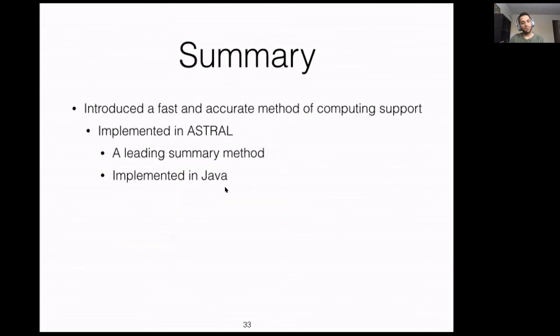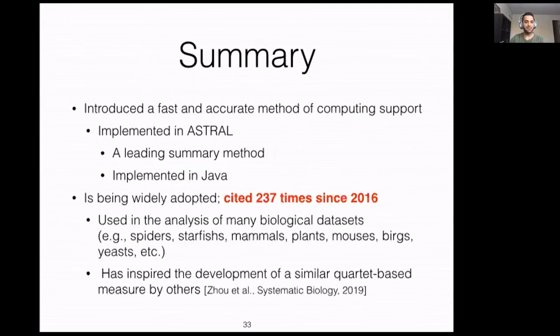In summary, we introduced a fast and accurate method of computing support. This method is implemented in ASTRAL, which is a leading summary method implemented in Java. Since publication, it has been widely adopted by the research community, cited more than 137 times since 2016. We showed its usage with simulations and empirical data. It has been used in the analysis of many biological datasets — spiders, starfish, mammals, plants, and so on — and has inspired the development of similar quartet-based measures by other groups.